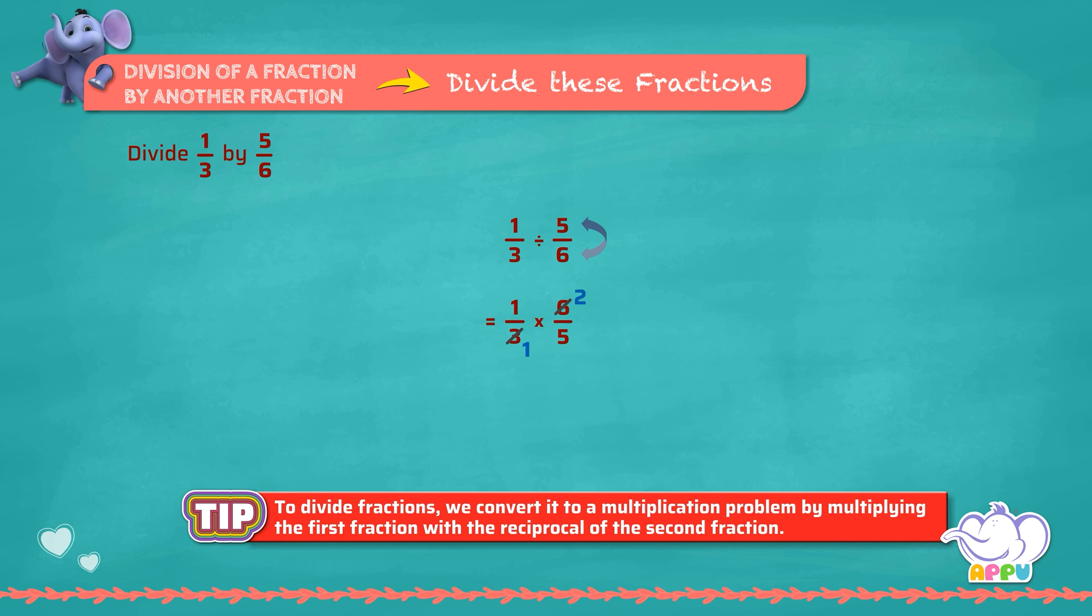We multiply the numerators: 1 times 2 equals 2. We multiply the denominators: 1 times 5 equals 5. This is equal to 2 by 5. The answer is 2 by 5.